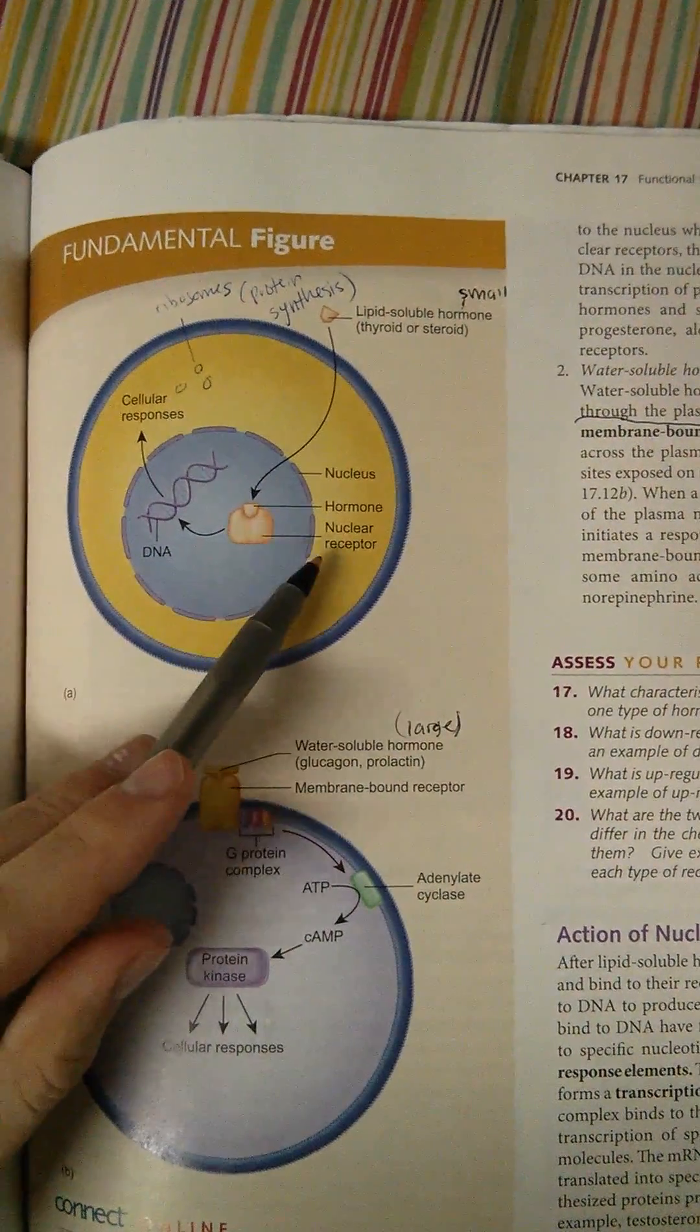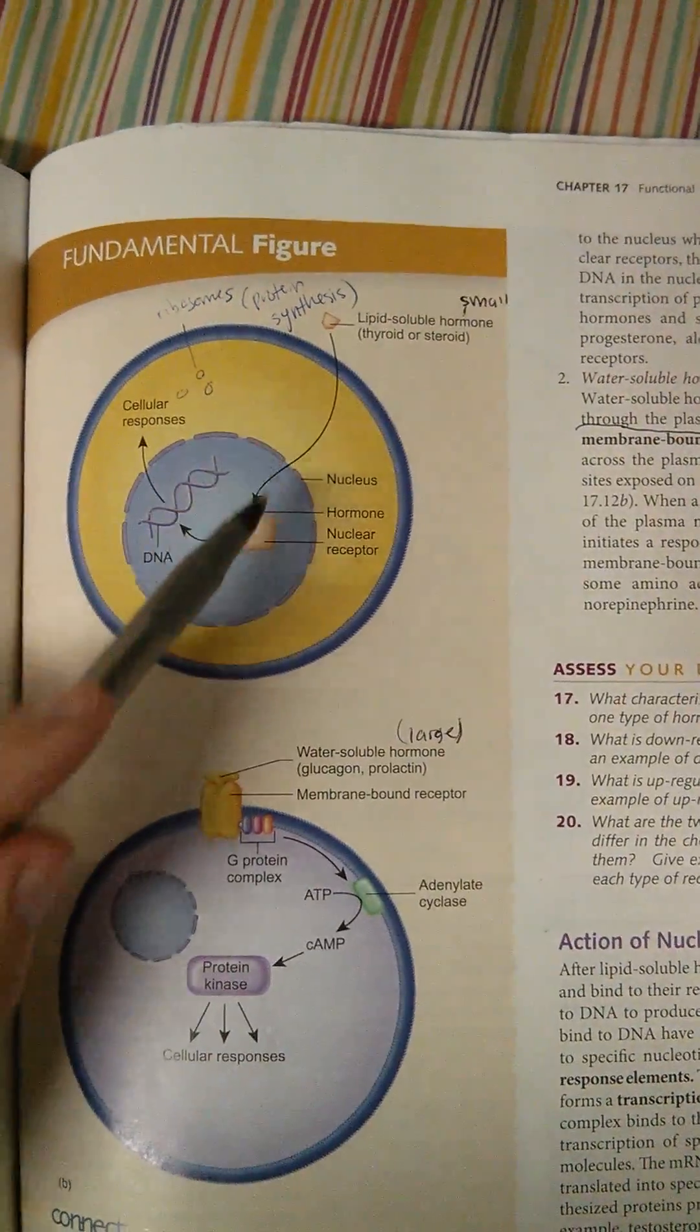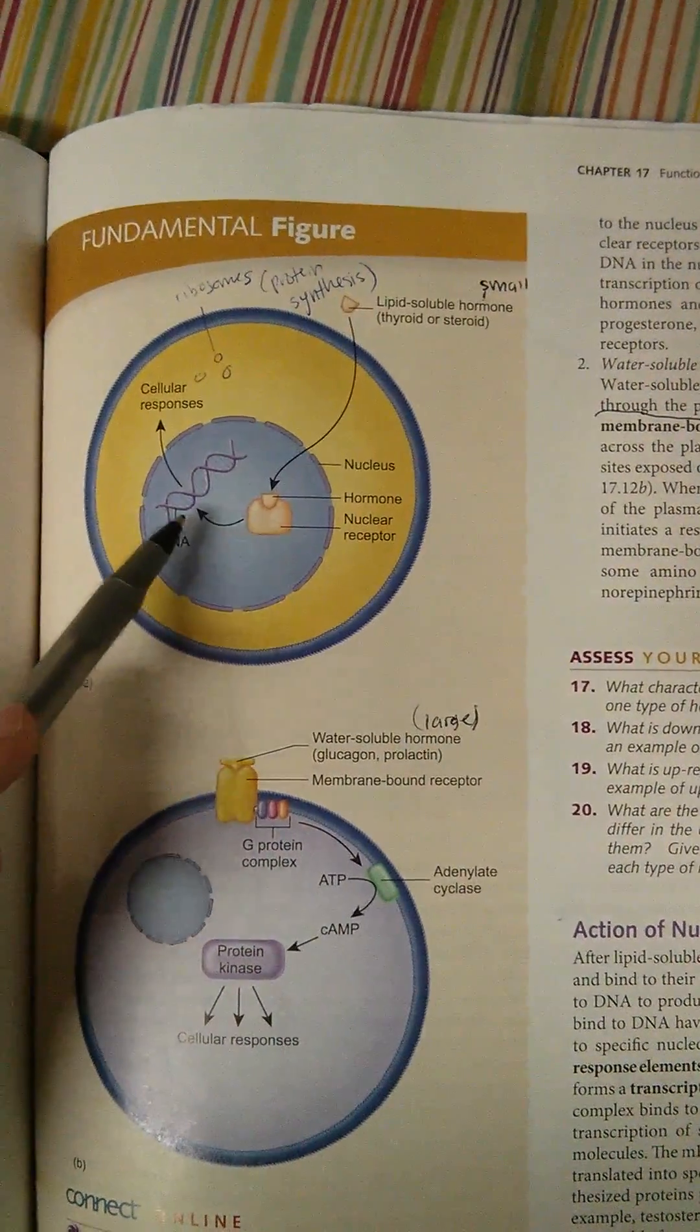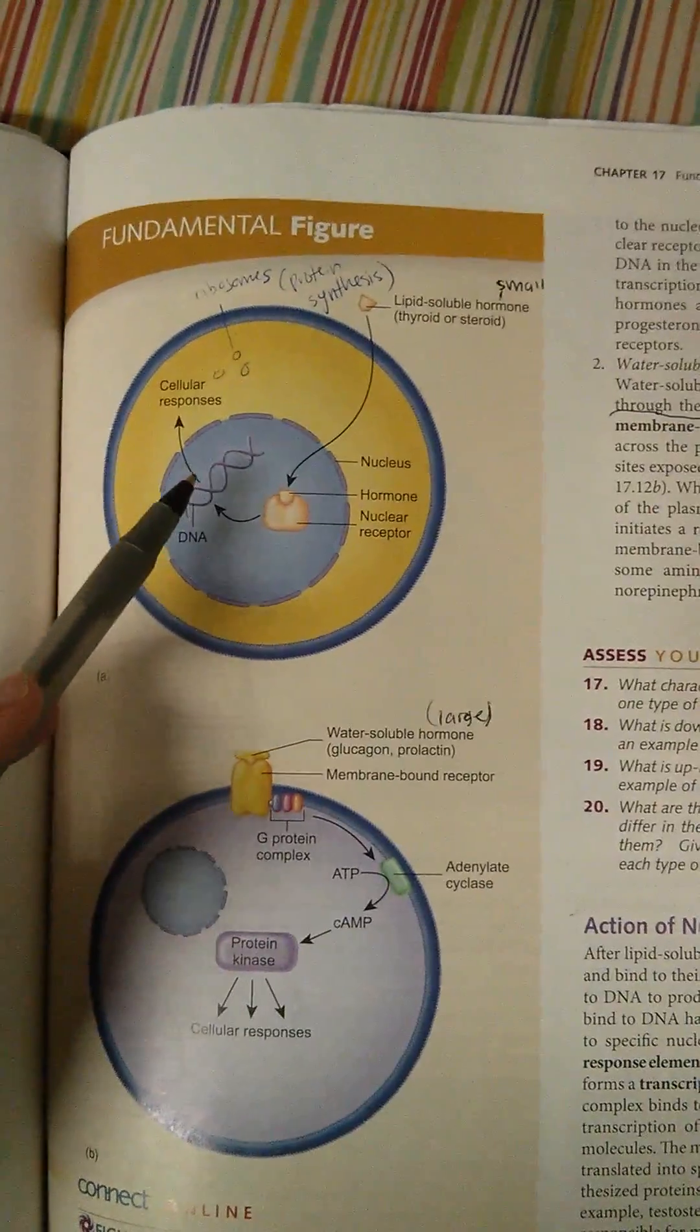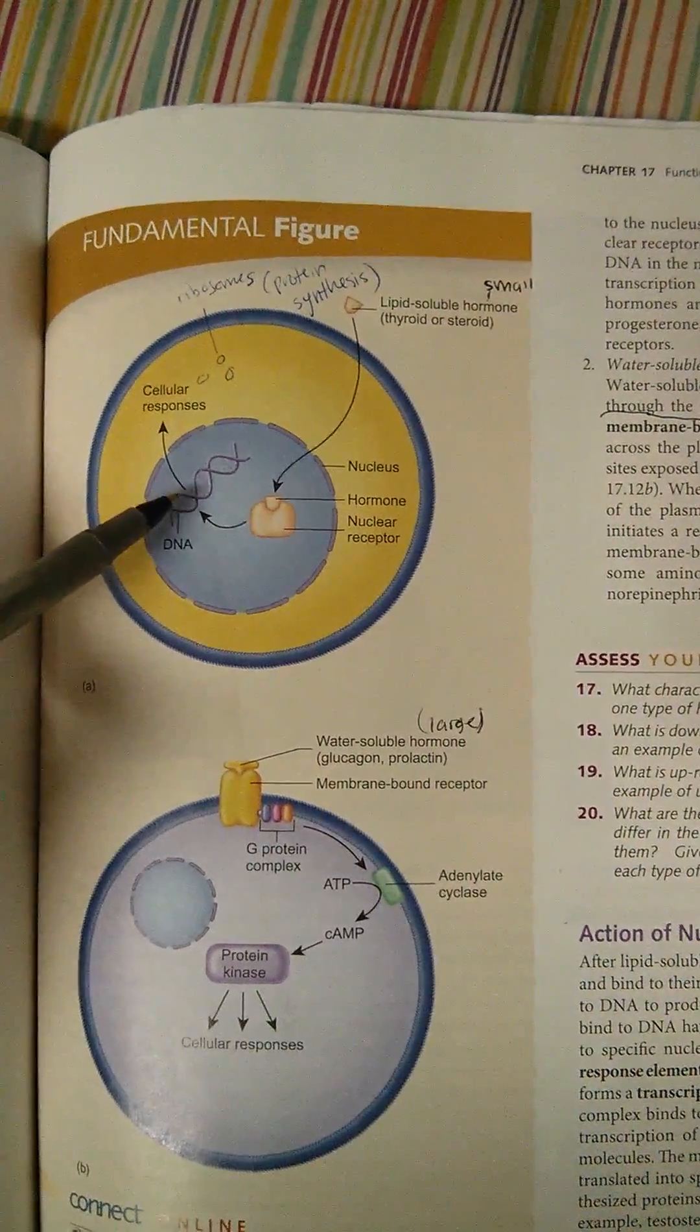This is the receptor here. It says the nuclear receptor because it is in the nucleus. So the hormone comes in and binds to the receptor, which then interacts with DNA, because DNA is found in the nucleus of the cell. And when it interacts with the DNA,